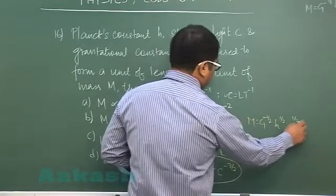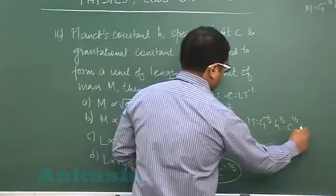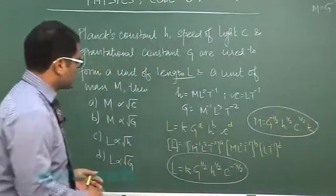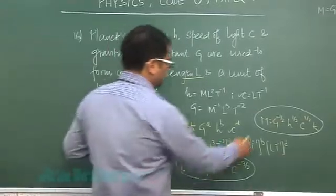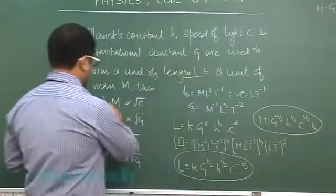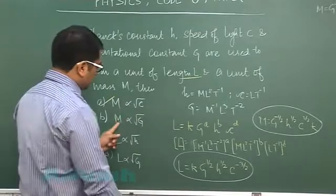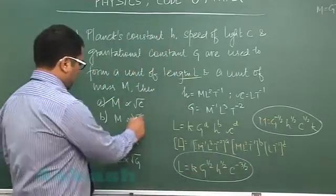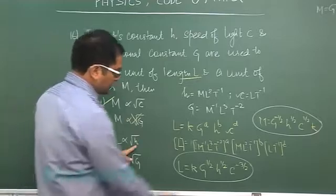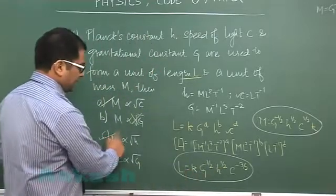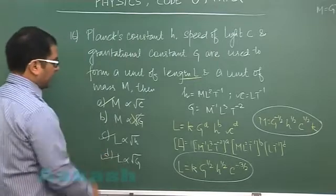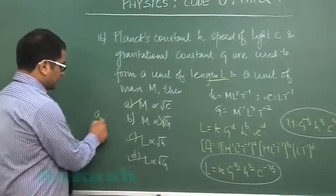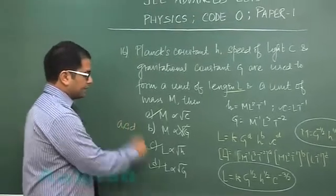You may add k, which is another dimensionless constant that is required. Now from these, it's very easy to choose: m directly proportional to root c is valid, m directly proportional to root g is not valid, l directly proportional to root h is valid, l directly proportional to root g is again valid. So question number 16 will have correct options as a, c, and d.